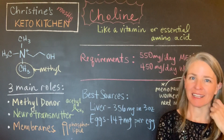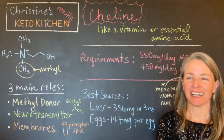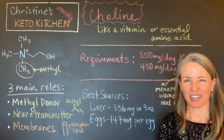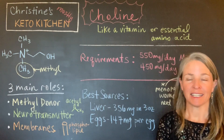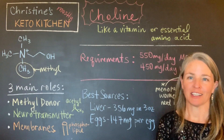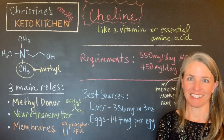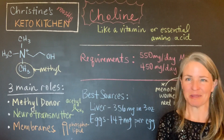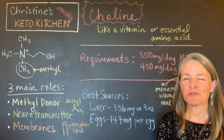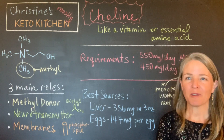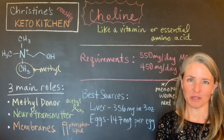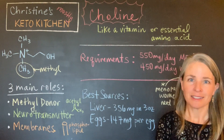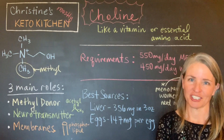Choline is kind of in a no-man's land. It is not really a vitamin or mineral or considered an essential amino acid. The essential idea is that essential foods are things you have to get through your diet — we've got essential fatty acids, essential amino acids, vitamins, minerals. Choline is not exactly one of those, even though it's really similar to them. The reason it's not fully classified as essential is because your body can make a small amount, but the amount it makes is insufficient compared to what your body actually needs.